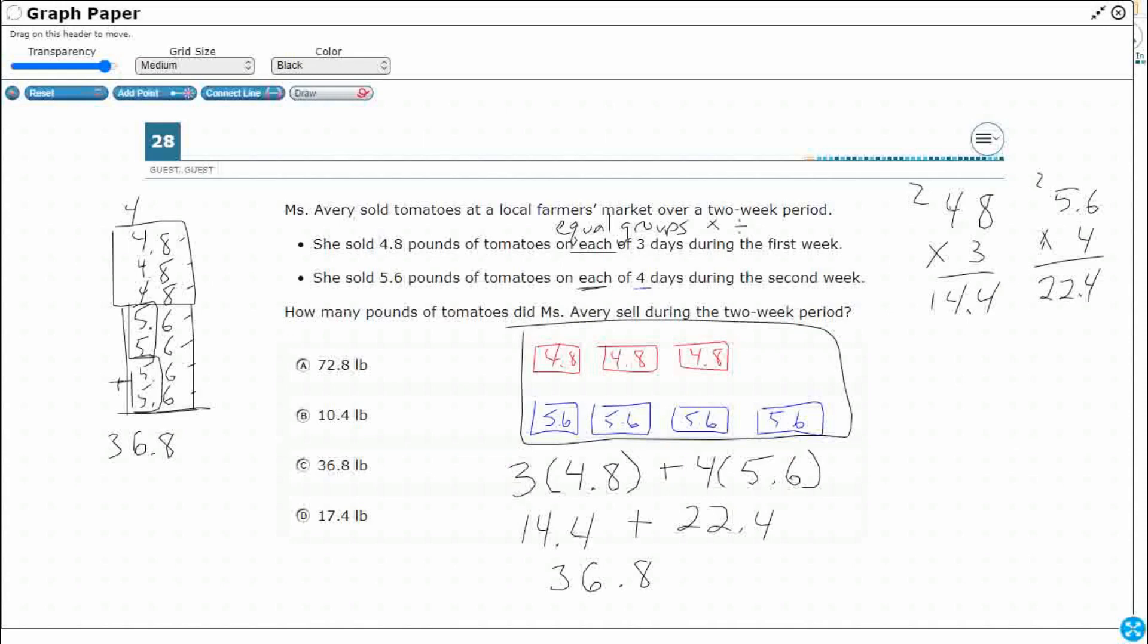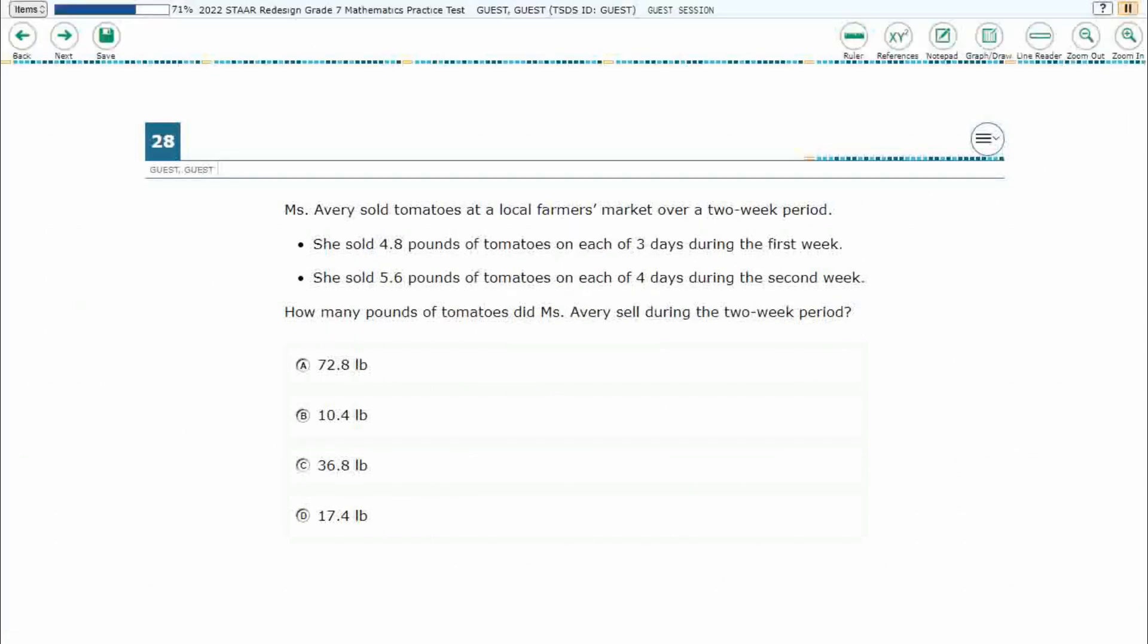So either way you set it up, whether you do a big addition problem or whether you set it up as this equation right here, you're going to end up with that same answer of 36 and 8 tenths or 36.8. So our answer is C.